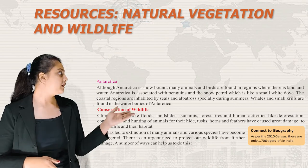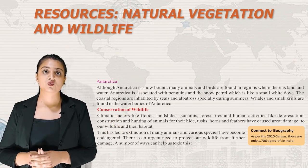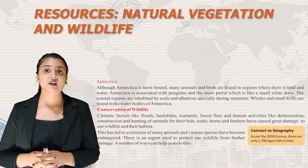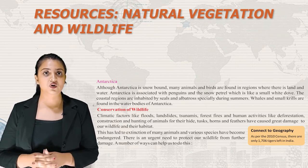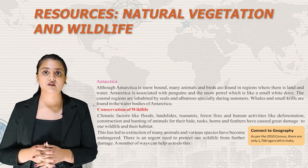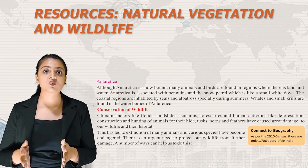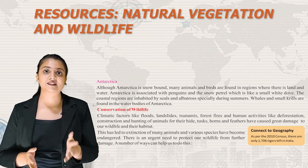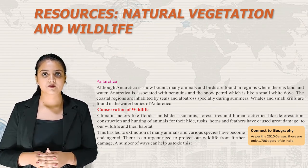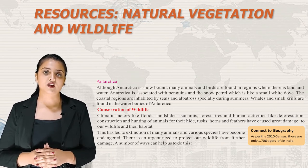Although Antarctica is snow-bound, many animals and birds are found in regions where there is land and water. Antarctica is associated with penguins and the snow petrel, which resembles a small white dove. The coastal regions are inhabited by seals and albatross, especially during summer. Whales and small krill are found in the water bodies of Antarctica.